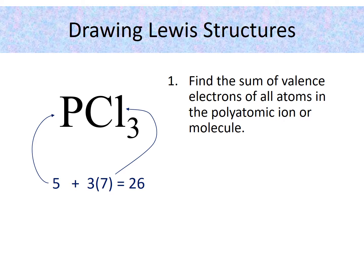Okay, let's draw some Lewis structures. So for the first step we need to sum up the valence electrons of all the atoms in the polyatomic ion or molecule.